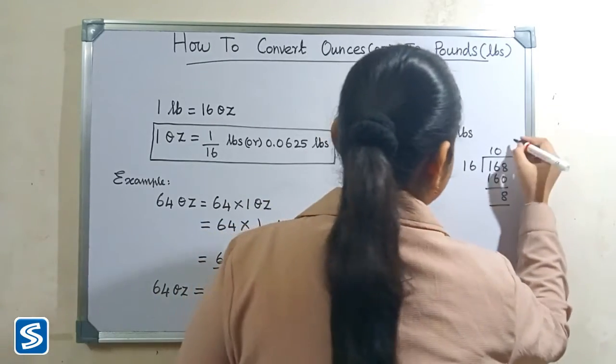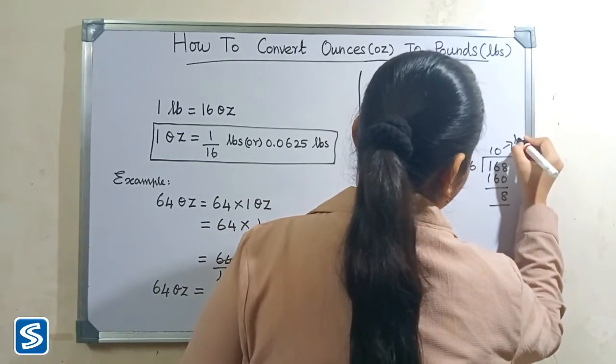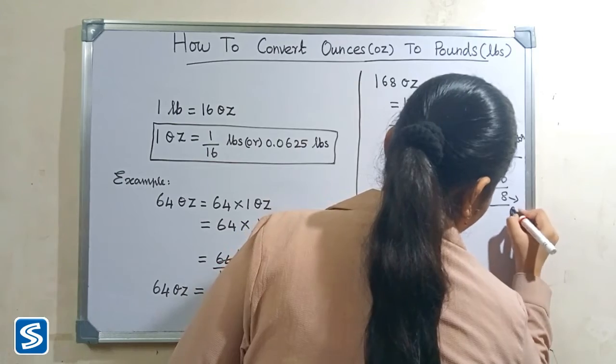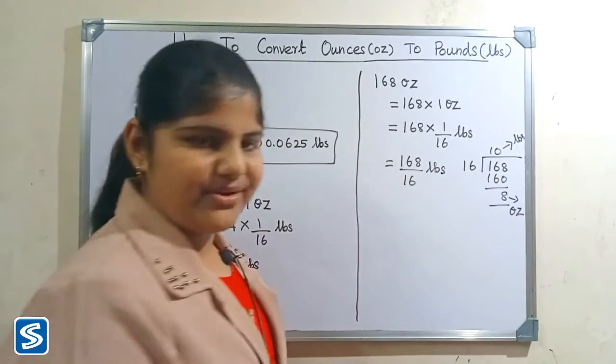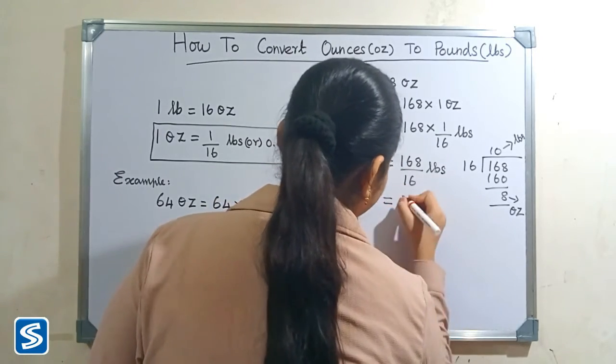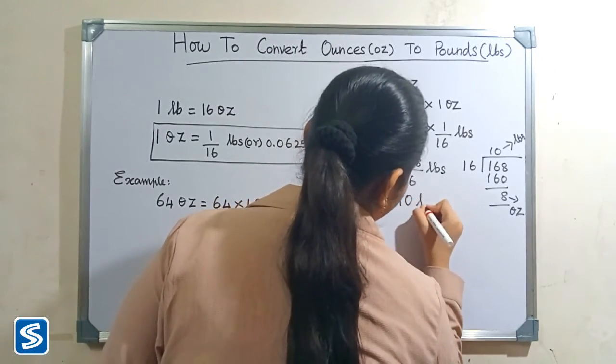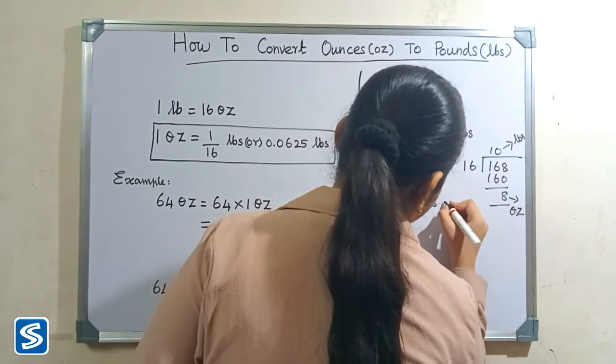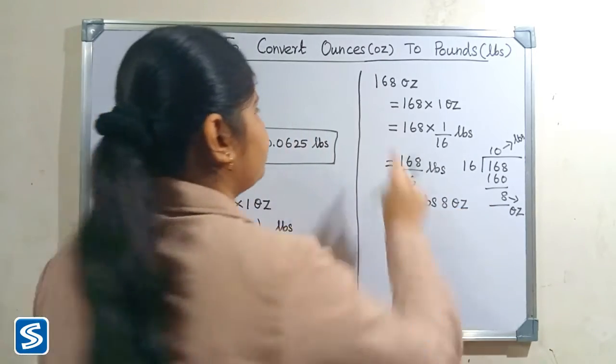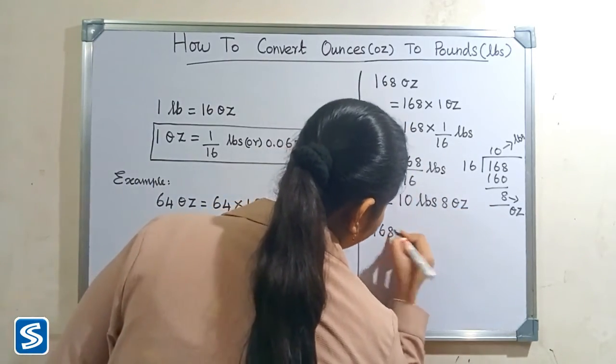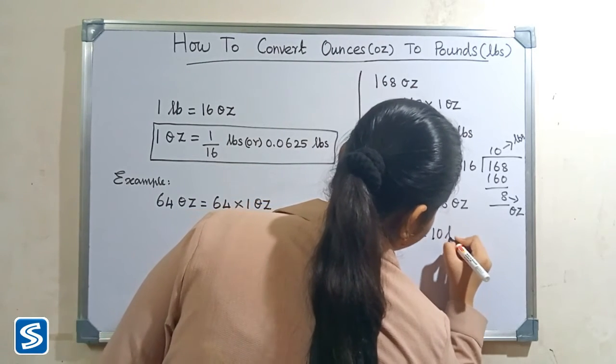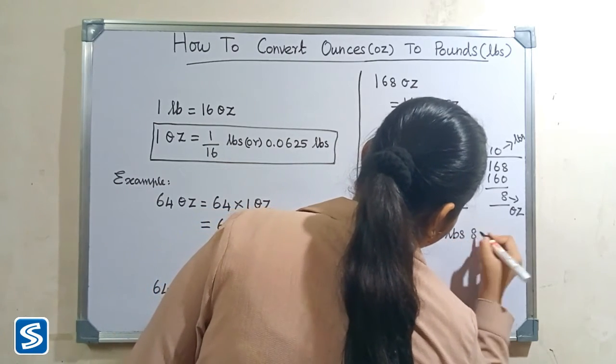Let us consider the quotient as pounds and remainder as ounces. So when we divide 168 by 16 pounds, our answer is 10 pounds with remainder 8 ounces. So, 168 ounces is equal to 10 pounds 8 ounces.